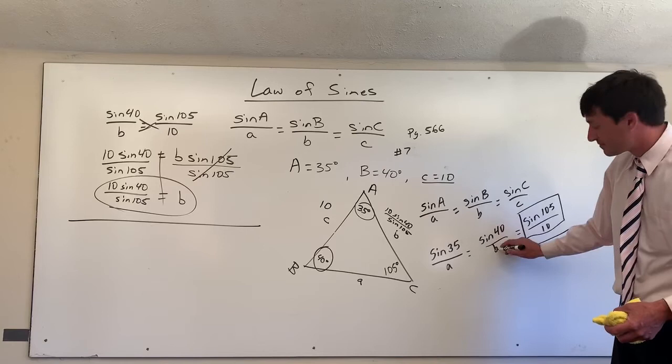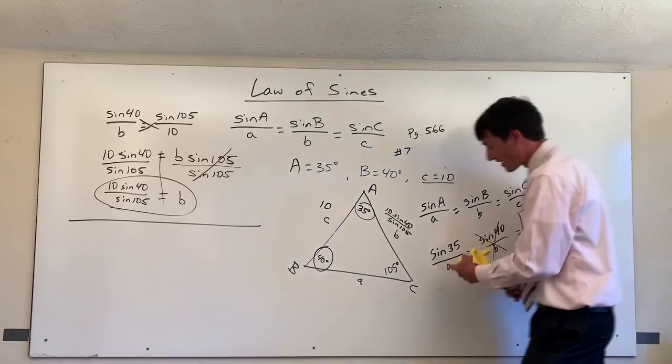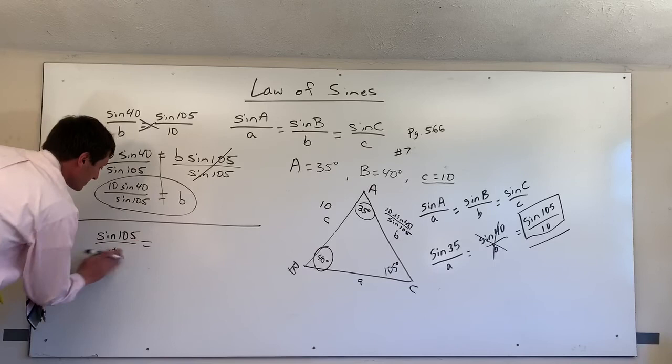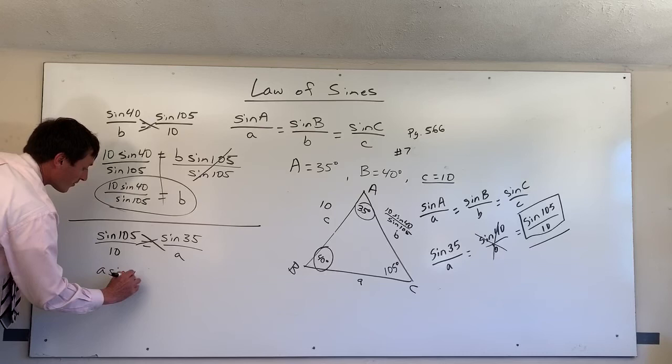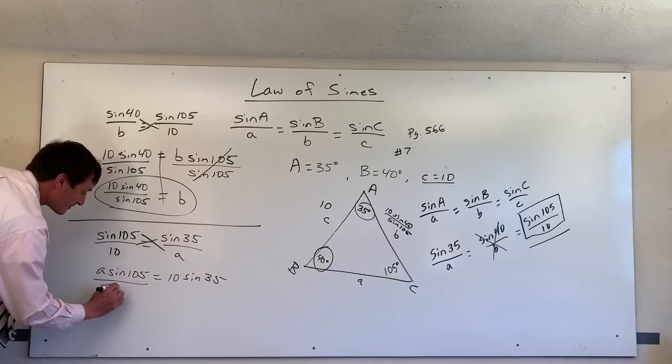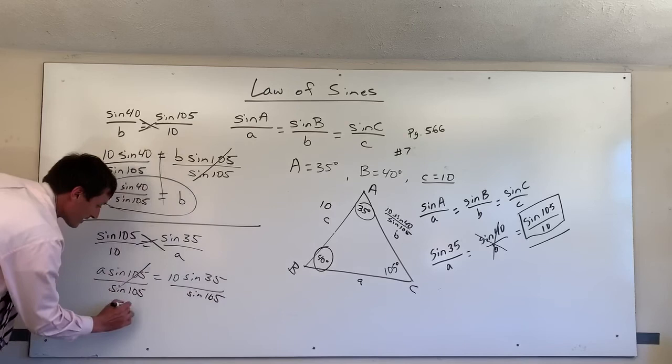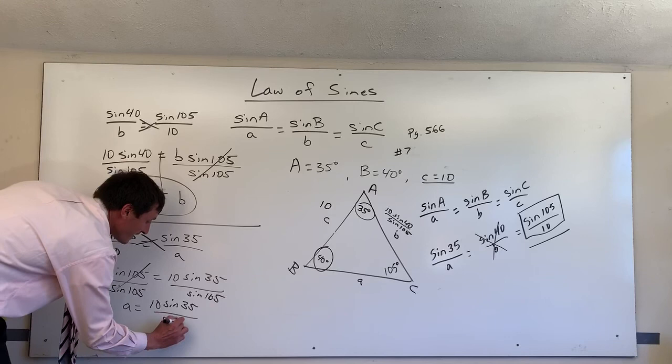Now we need to find a. We're still going to use sine of 105 divided by 10, set equal to sine of 35 divided by a. Cross-multiplying: a times sine of 105 equals 10 times sine of 35. Dividing by sine of 105, we get a equals 10 times sine of 35 divided by sine of 105. I hope that gets you started with the Law of Sines. I will see you guys in the next video. Have a wonderful afternoon.